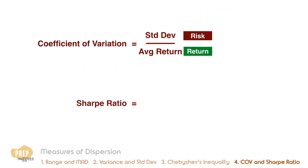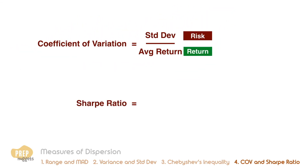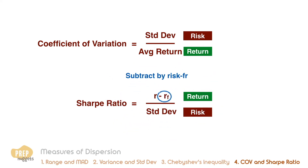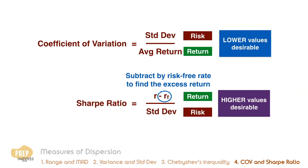The Sharpe ratio is the inverse of the coefficient of variation — it measures the return per unit of risk. By definition, the Sharpe ratio is the excess return per unit of risk, so we subtract the risk-free rate to find the excess return. In evaluating investment options, more returns and less risk is desirable, so you would want to choose those with higher Sharpe ratios.